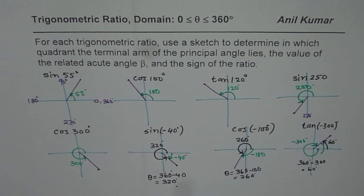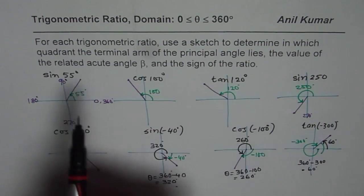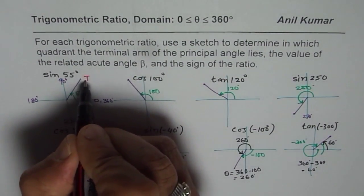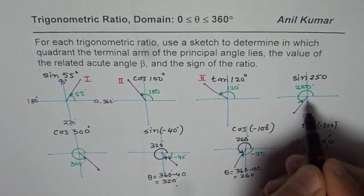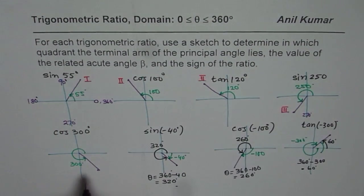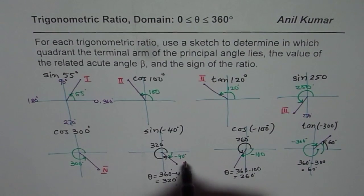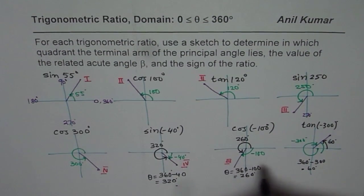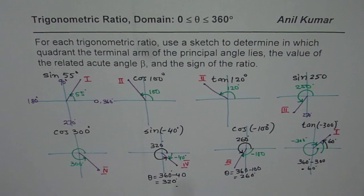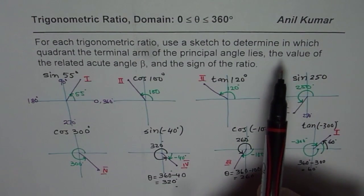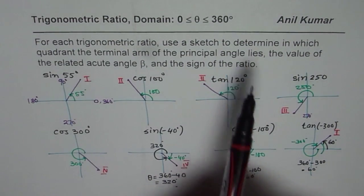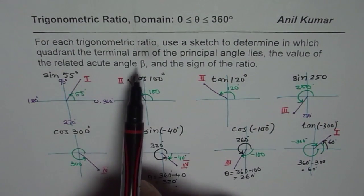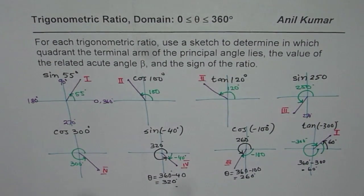Now let us look at the quadrants. 55 degrees is in quadrant 1, 100 degrees is in quadrant 2, 120 degrees is in quadrant 2, 250 degrees is in quadrant 3, 300 degrees is in quadrant 4, the principal angle 320 degrees is in quadrant 4, 260 degrees is in quadrant 3, and 60 degrees is in quadrant 1. Now we need to find the related acute angle beta and the sign of the ratio.